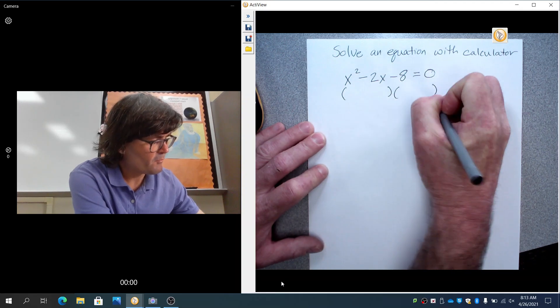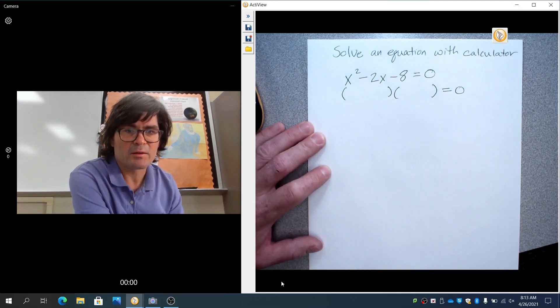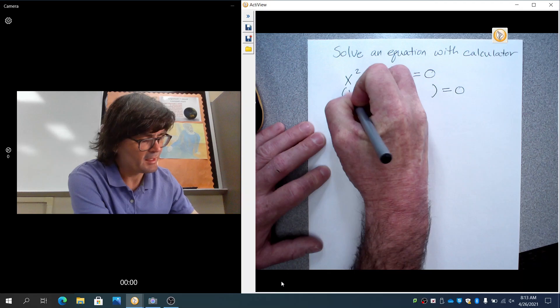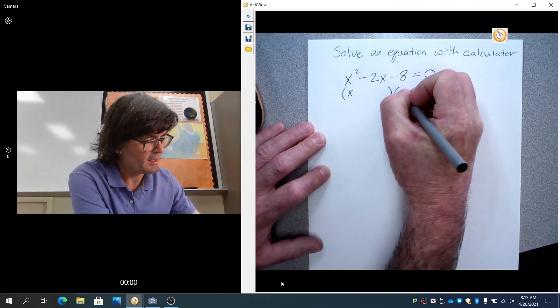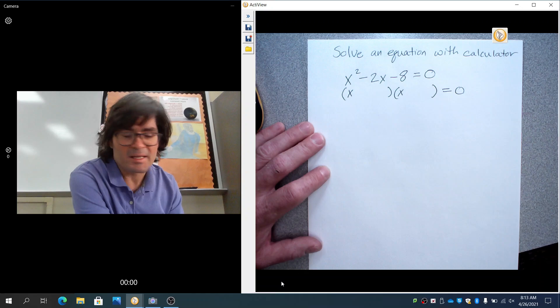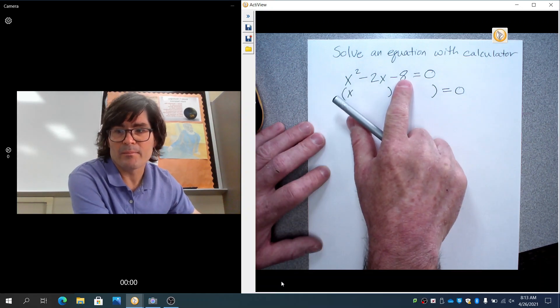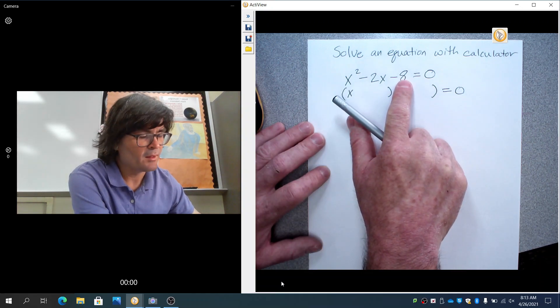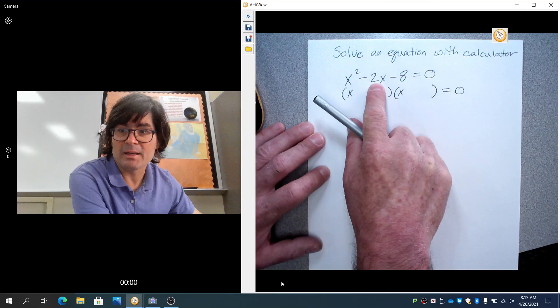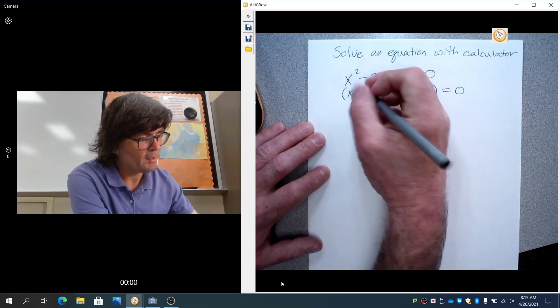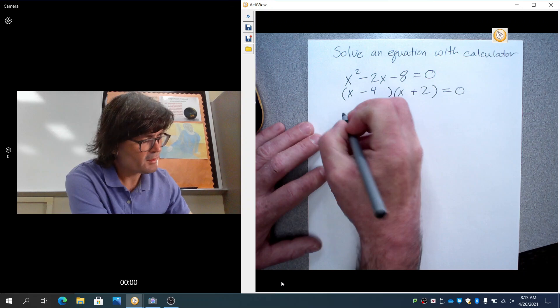This one is a problem that's pretty easy to factor. What multiplies to be x squared? Just an x and x. And then for the minus 8, you'd ask the question, what multiplies to be negative 8 and also adds up to be negative 4? That would be a negative 4 and a plus 2.